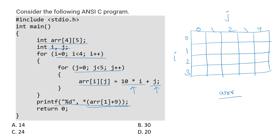For the first index 0,0 it will be 10 times 0 plus 0, which is 0. In the entire first row the value of 10 times i will be the same because i is not changing, only j is changing. So for the entire first row it will simply be 0, 1, 2, 3, and 4. For the second row, 10 times i gives us 10, and adding 0, 1, 2, 3, 4 gives us 10, 11, 12, 13, and 14.